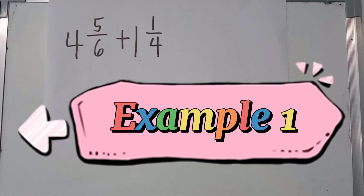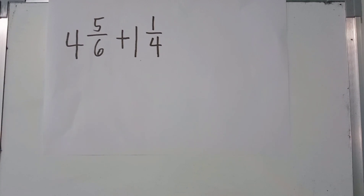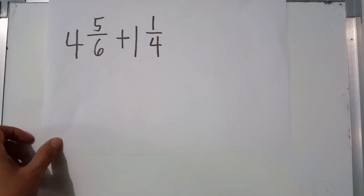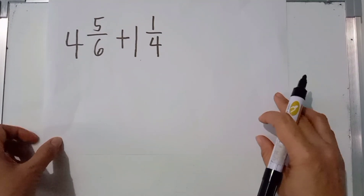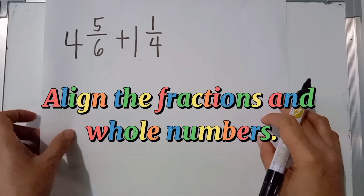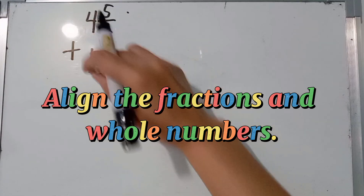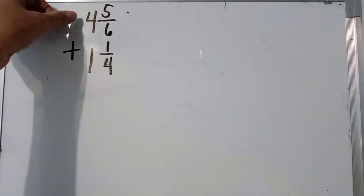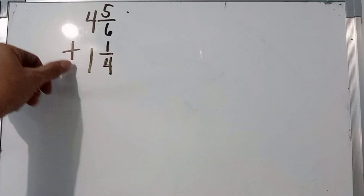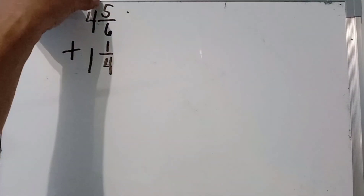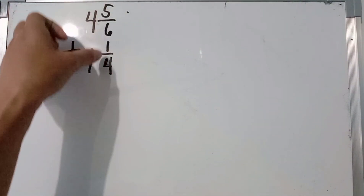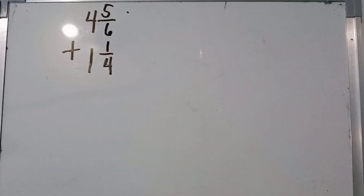Example number 1: 4 and 5 over 6 plus 1 and 1 fourth. The first thing we are going to do is align the fractions and the whole numbers like this. The whole numbers are aligned, and the fractions are aligned as well.